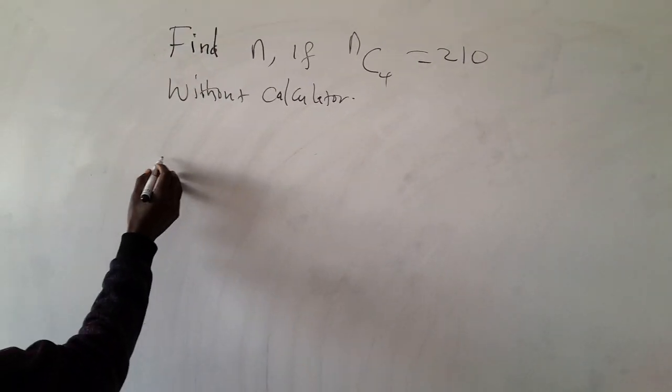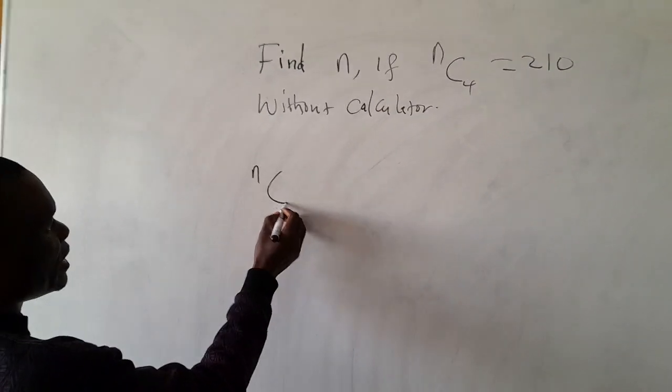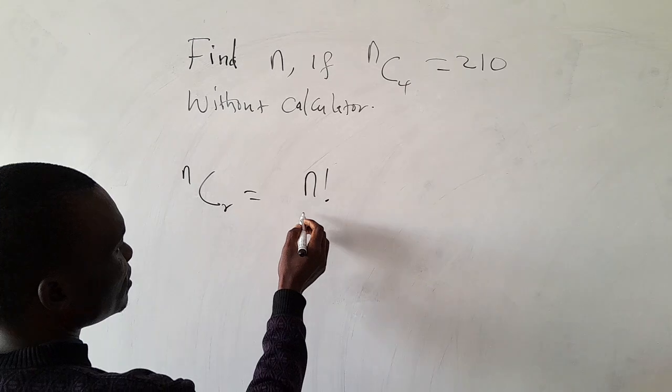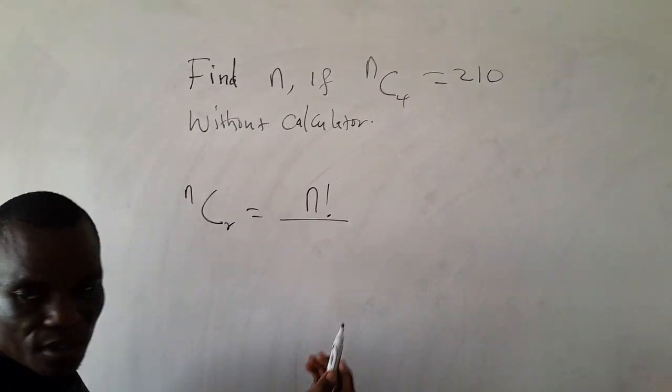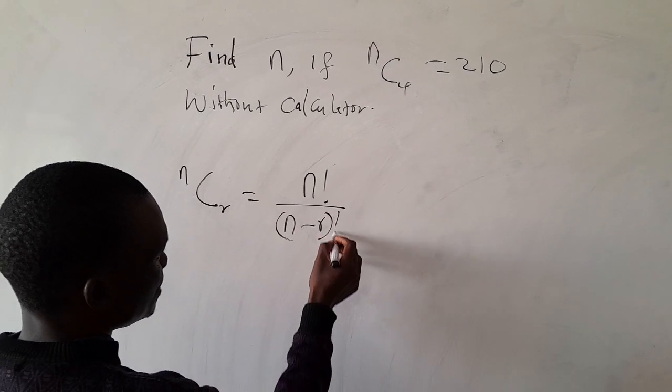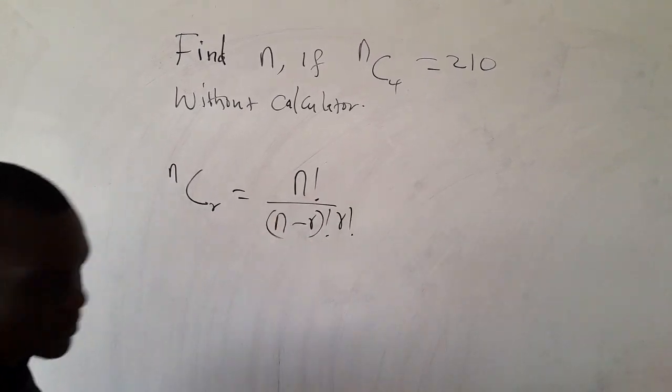So we have nCr equals n factorial divided by n minus r factorial, then r factorial, right?